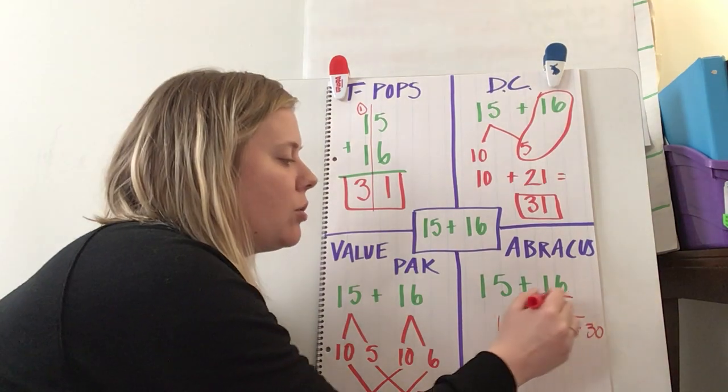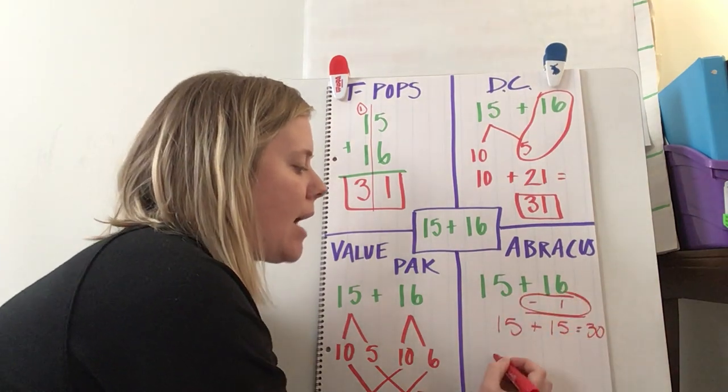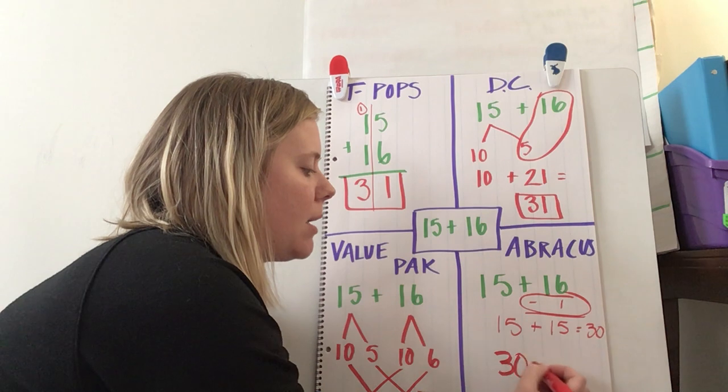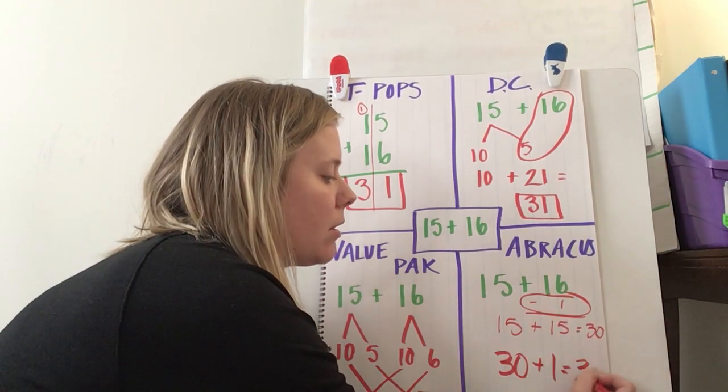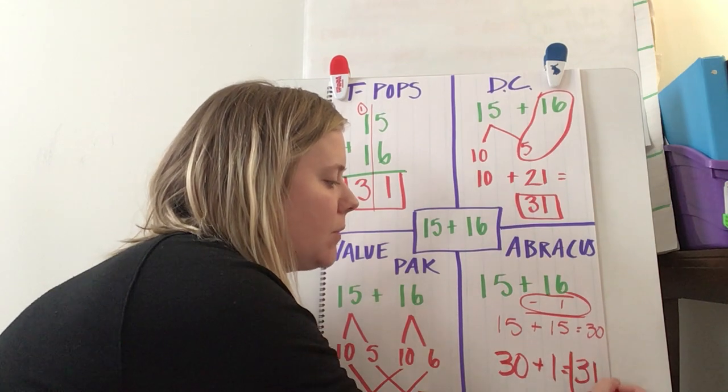Well, the only thing is, if I took one away here, I need to add it back at the end. So I have my answer 30 plus adding back in the one I originally took away equals 31.